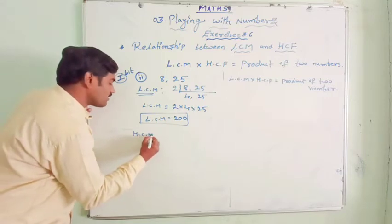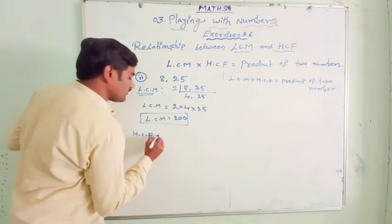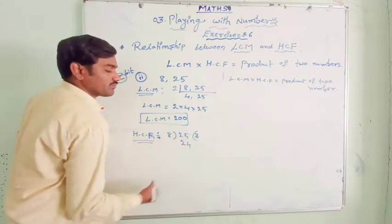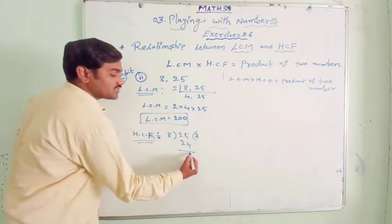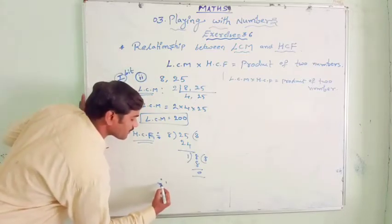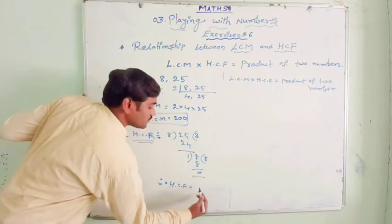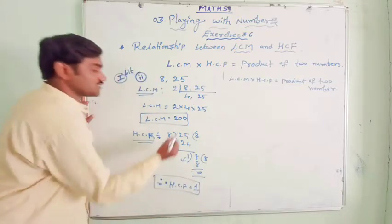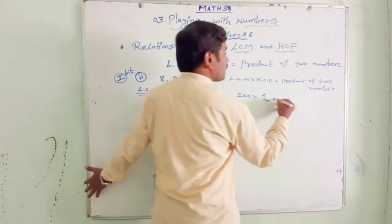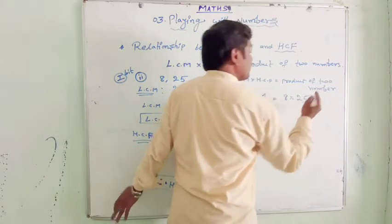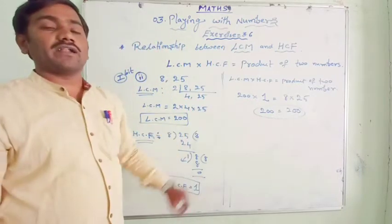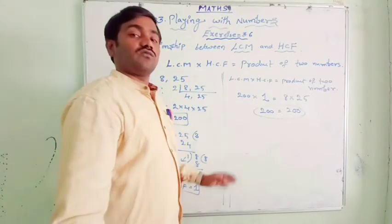Now HCF of 8 and 25: using the division method, 25 divided by 8 gives remainder 1. This remainder becomes the divisor. 8 divided by 1 gives remainder 0. Therefore HCF = 1. Now checking the relation: LCM × HCF = 200 × 1 = 200. Product of the two numbers = 8 × 25 = 200. The condition is satisfied.